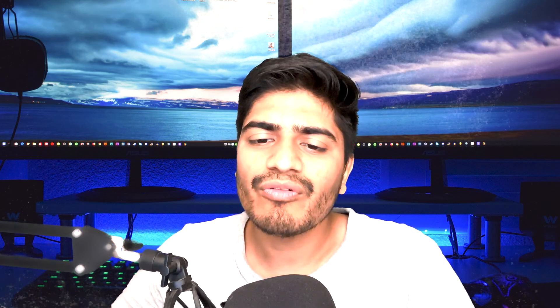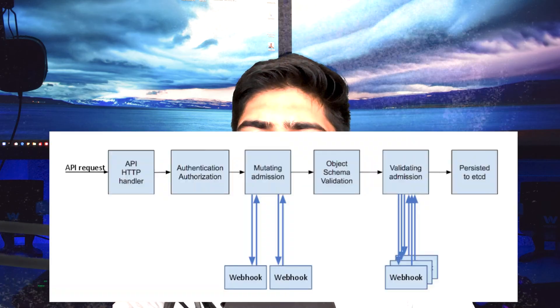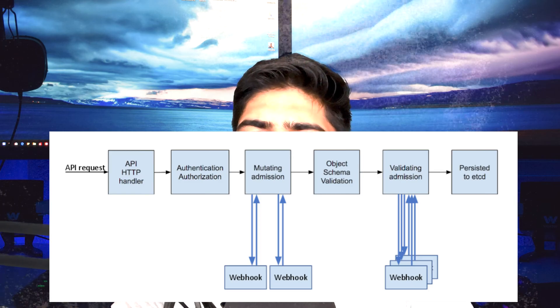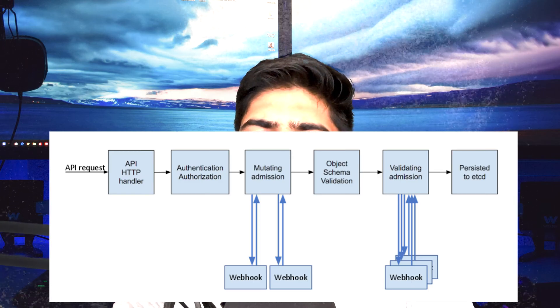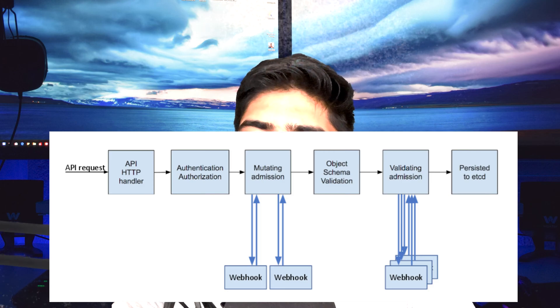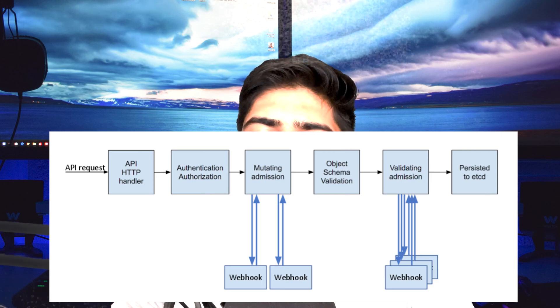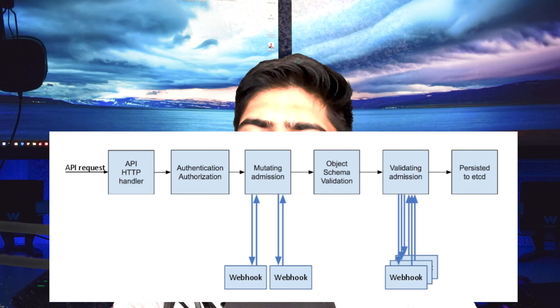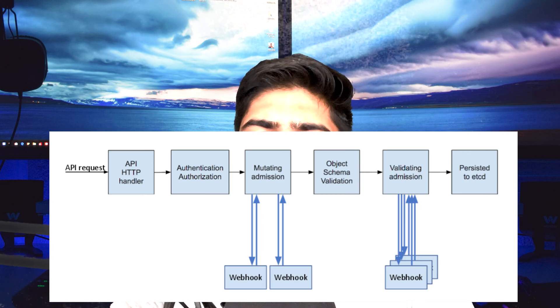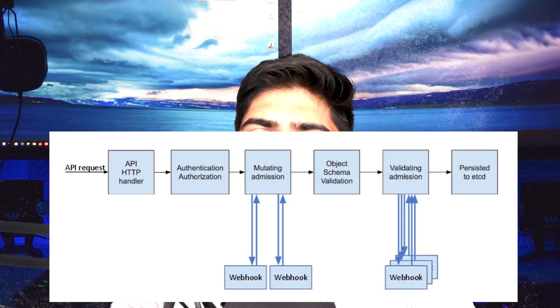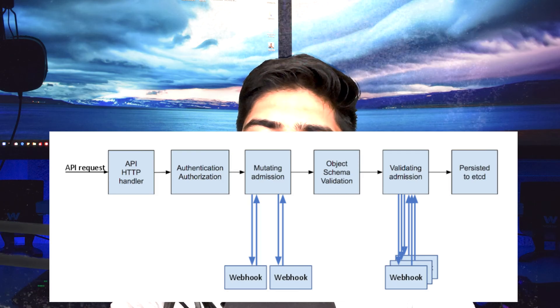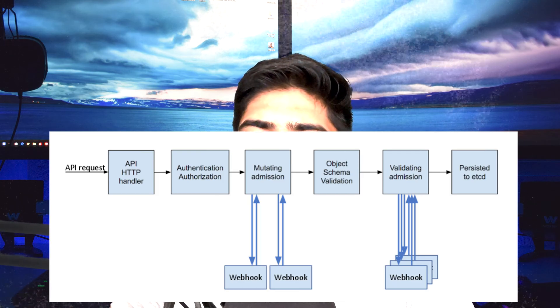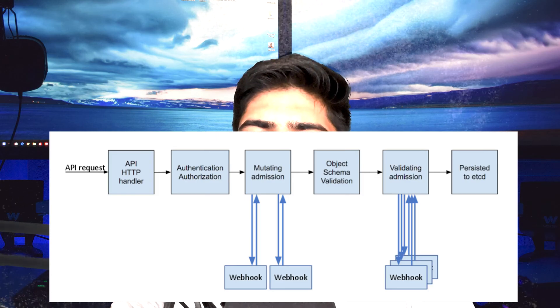When a Kubernetes API request is made, the admission webhook intercepts the request before it reaches the API server. The webhook then performs validation and checks based on the request content and configured admission webhook policies. If the request passes all those checks, it is allowed and recorded into the cluster. However, if the request fails any of these checks, the webhook rejects it with an error message.